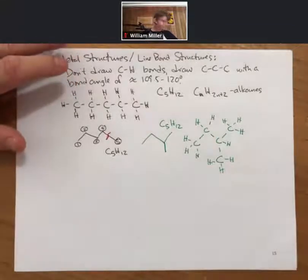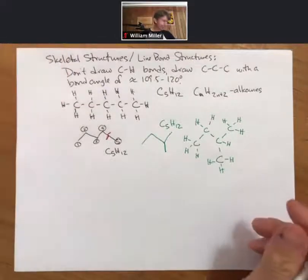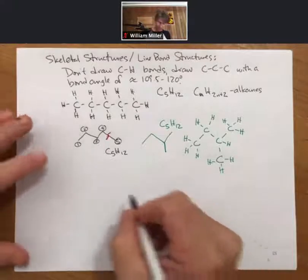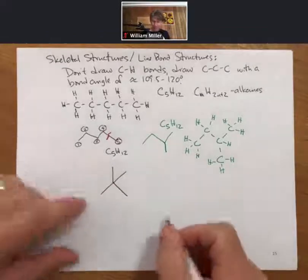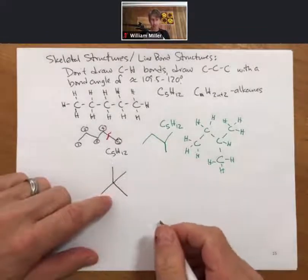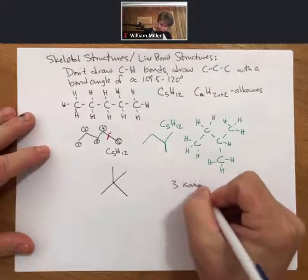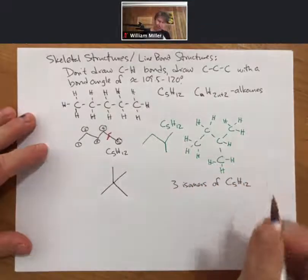And from there, we'll draw the one other isomer of C5H12. 1, 2, 3, 4, 5. This is another isomer. So, these are the 3 isomers of C5H12.